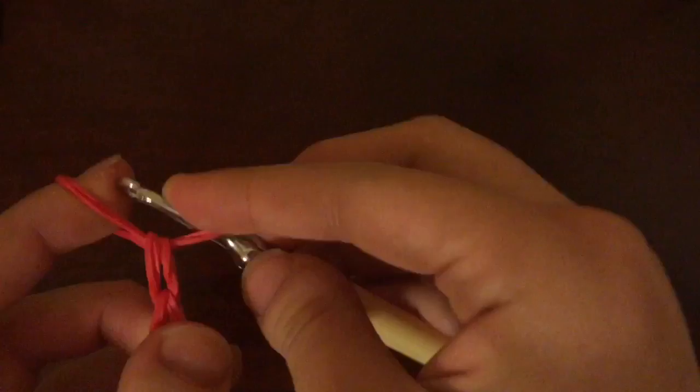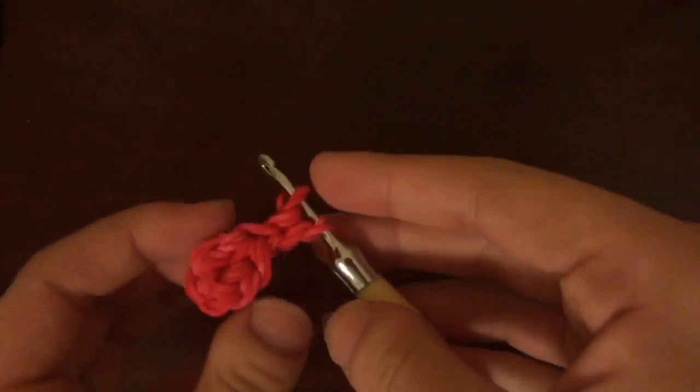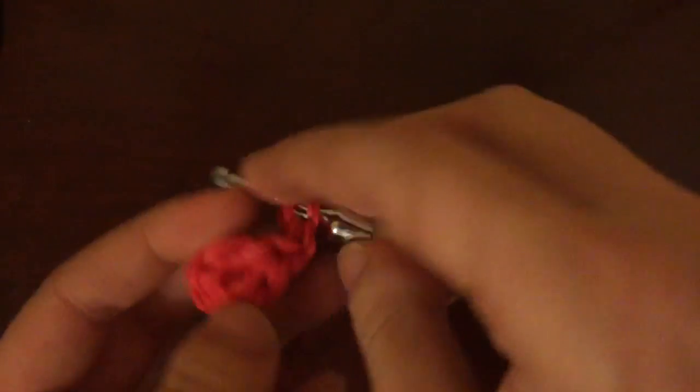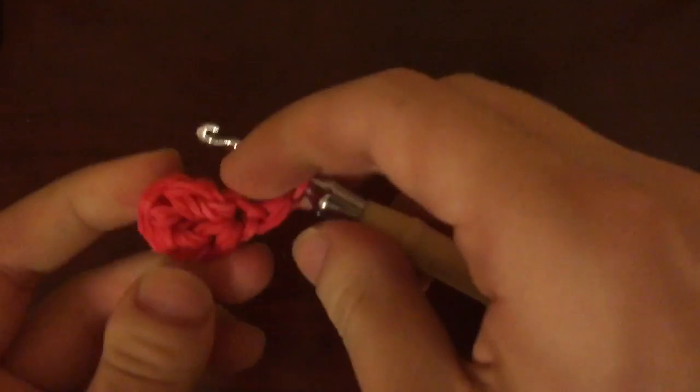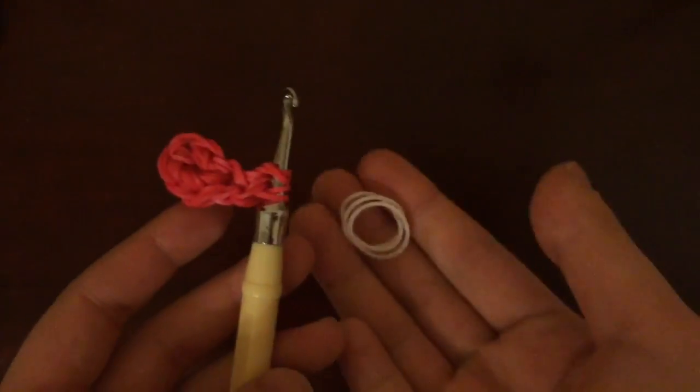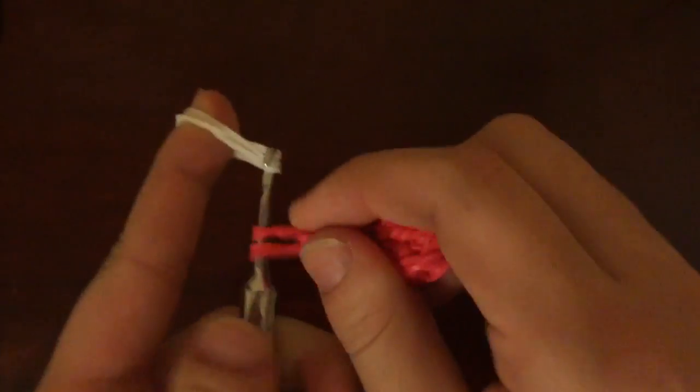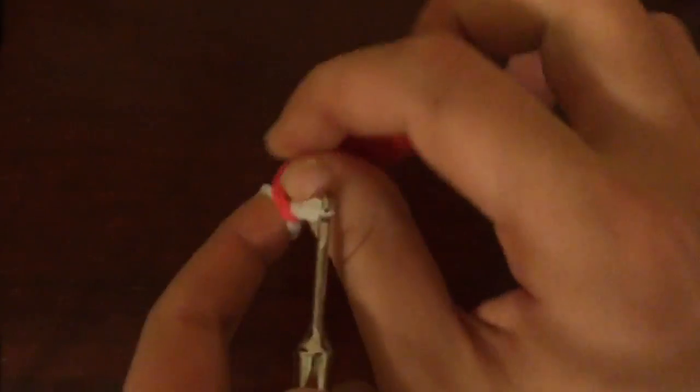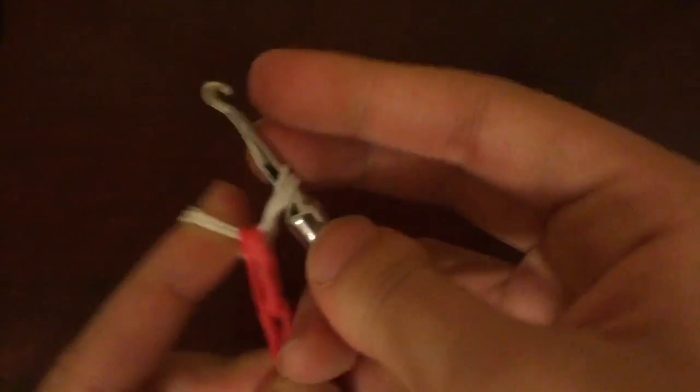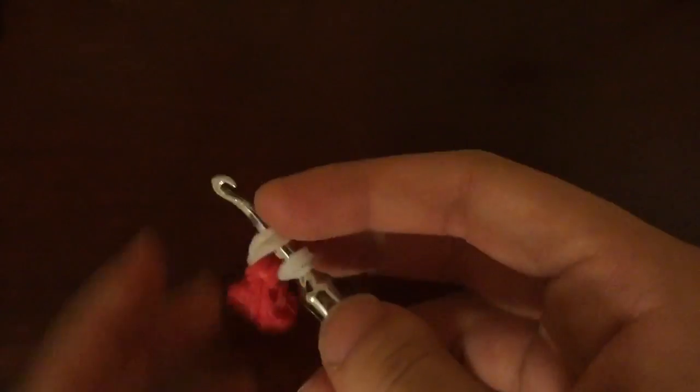And once this is done, it's not going to look like a perfect stocking, but all we need to do is adjust that. So I would pull this part that we just made, and then you want to take 3 white rubber bands and place them onto your hook, like so, and pull the red part onto there, and place the open end there.